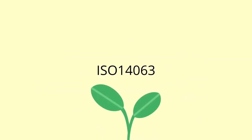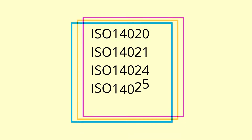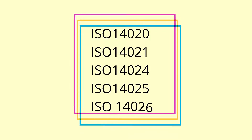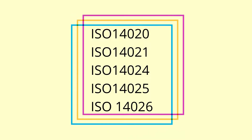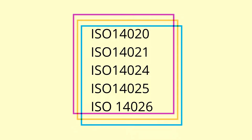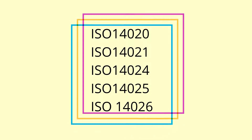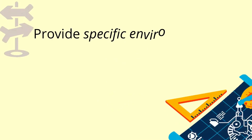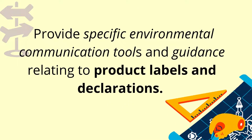It is worth noting that ISO 14020, ISO 14021, ISO 14024, ISO 14025, and ISO 14026 provide specific environmental communication tools and guidance relating to product labels and declarations.